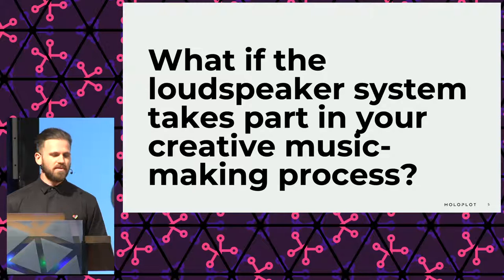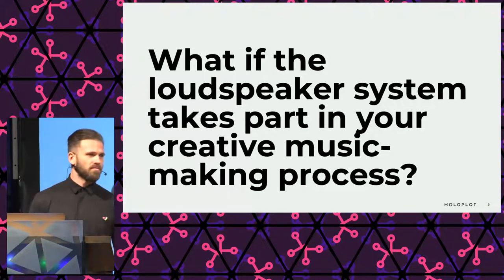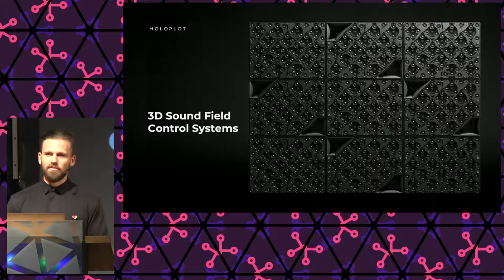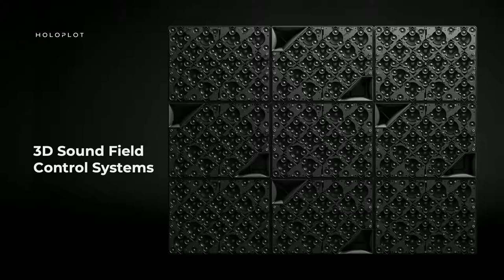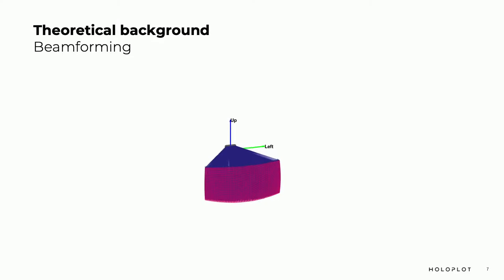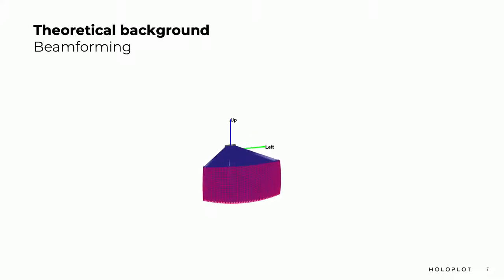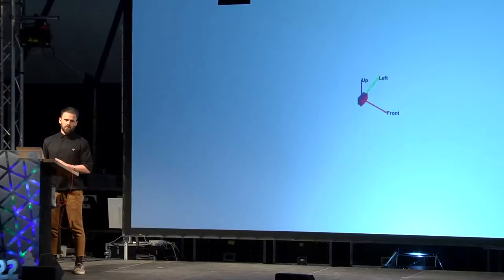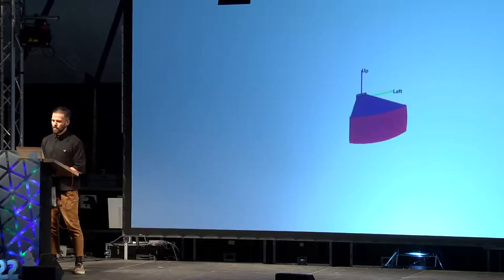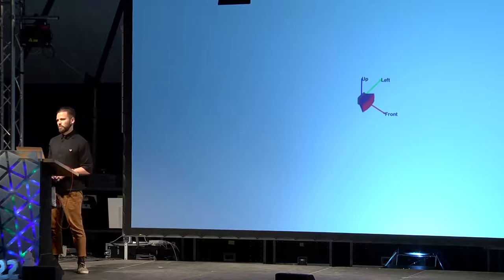Which brings me to the topic of my talk: what if the loudspeaker system would take part in your creative music-making process? I would like to introduce you to sound field control systems, particularly those with 3D capabilities, as is the case of Holoplot, which we will hopefully get to experience today. The idea of using an array of speakers to shape sound using beamforming has been around for many years, but until now it has been very difficult to achieve in both the horizontal and vertical axis simultaneously. Beamforming is a technique that implies the usage of multiple loudspeakers and interference between them, put in a line array or matrix array — a two-dimensional speaker surface — commonly driven by a digital signal stage.